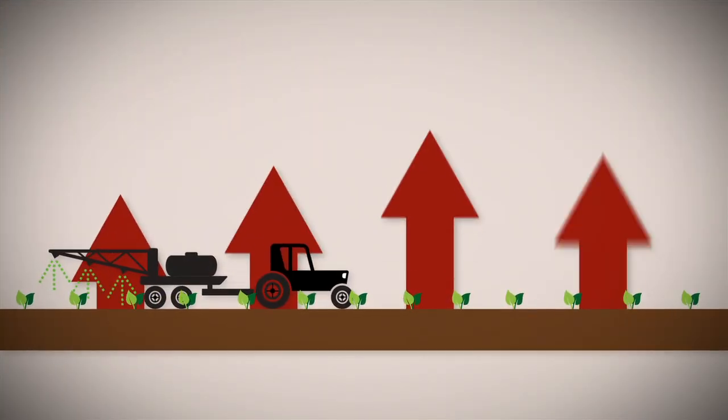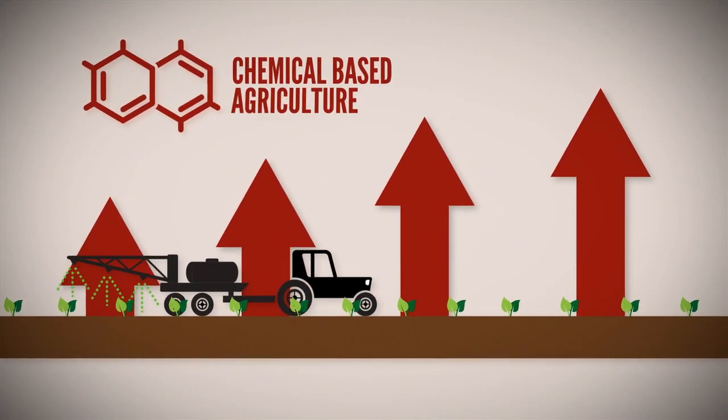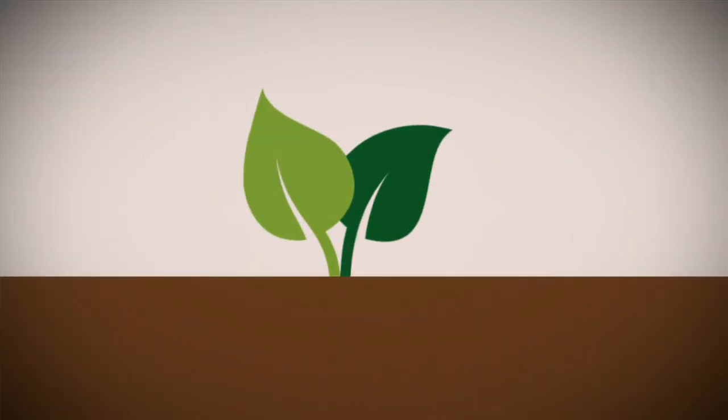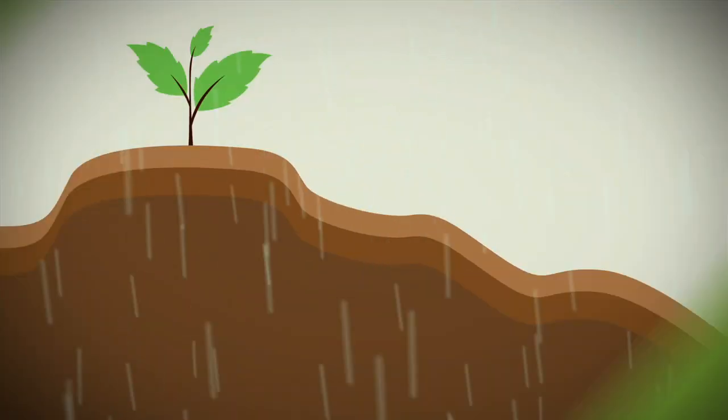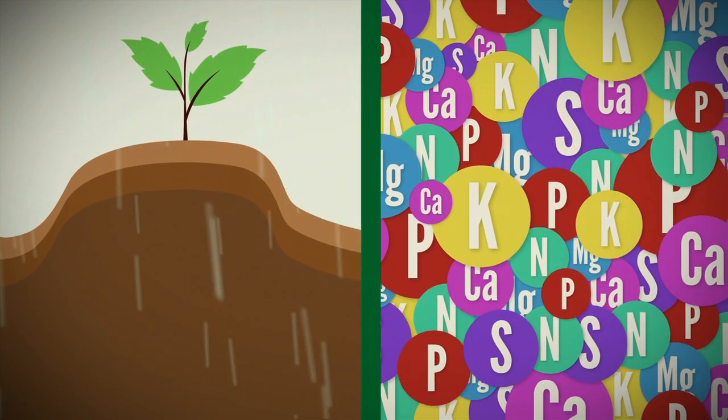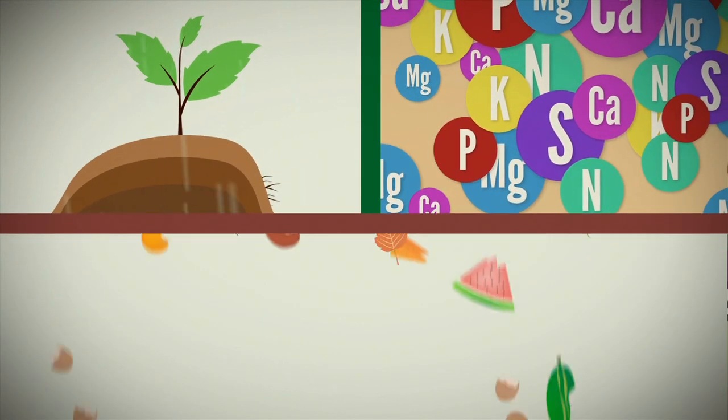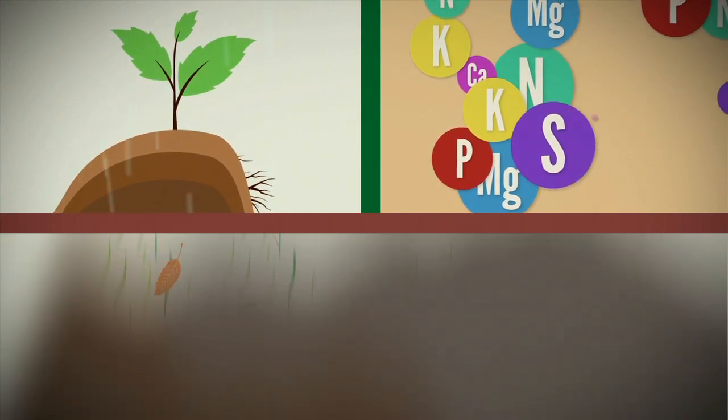Because of our increased dependency on chemical-based agriculture, our soils are losing vitality. While our agricultural soils are eroding and losing nutrients, we are throwing away millions of tons of food scraps and yard trimmings every year. The solution?